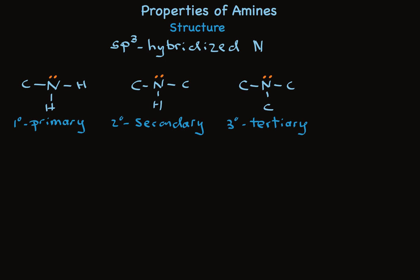There's a fourth group — ammonium salts of amines — and they have four carbons attached. It's important to notice that primary, secondary, and tertiary amines all have this unshared pair associated with the nitrogen that dominates their chemistry and dramatically affects the structure.